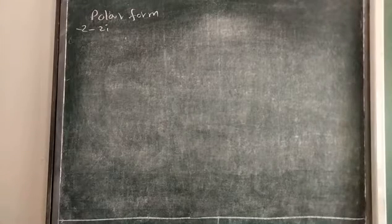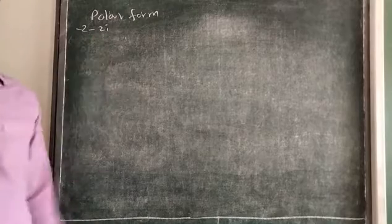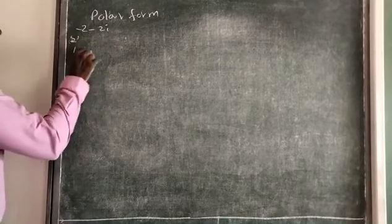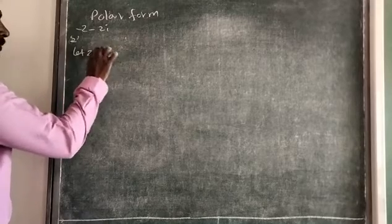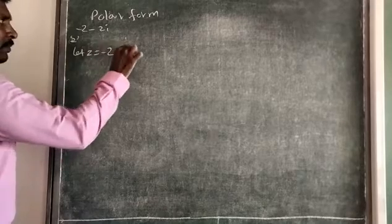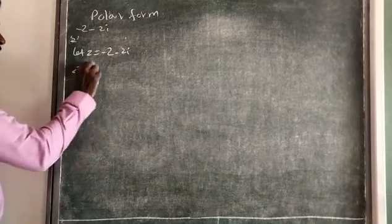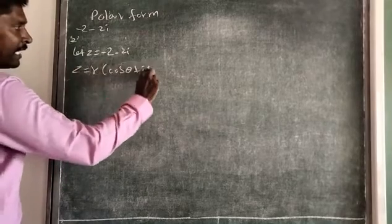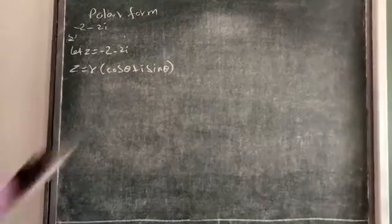We are going to find the polar form of the complex number, the given minus 2 minus 2i. What is the polar form? We want to find the value r(cos θ + i sin θ). So our aim is to find the value of r and θ.